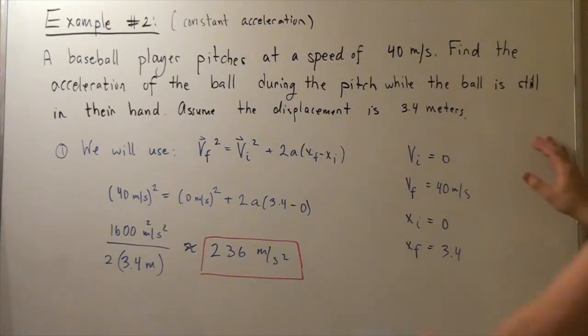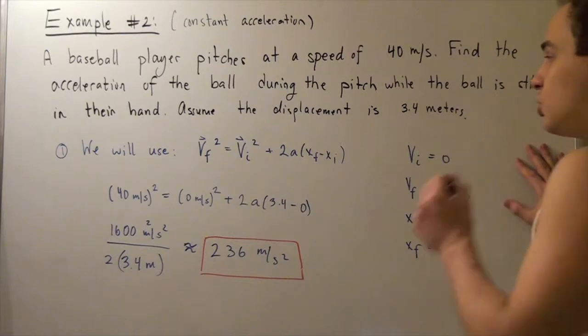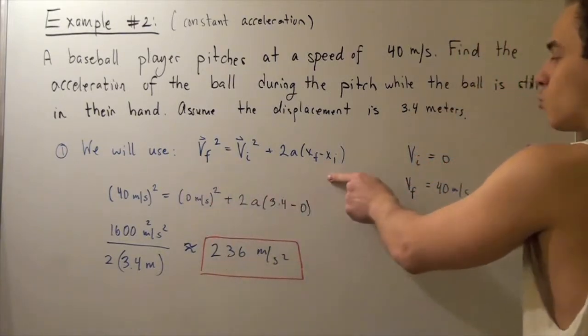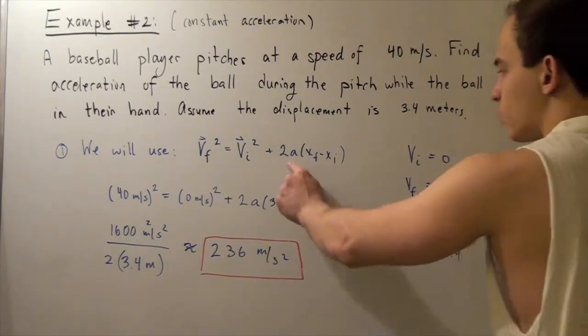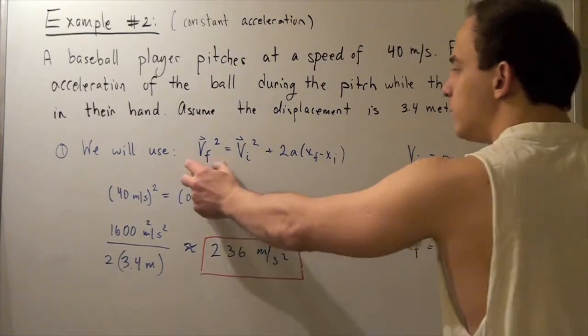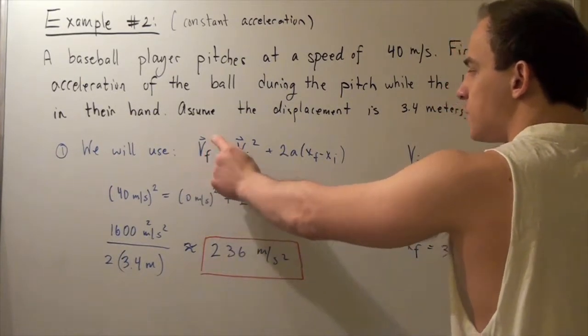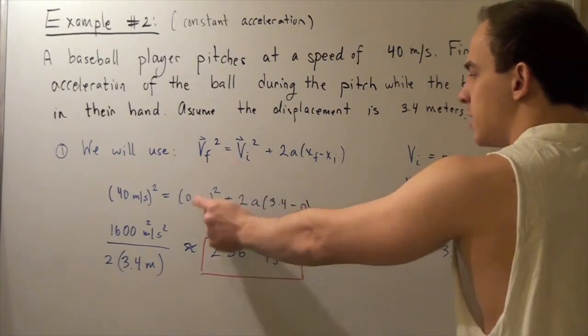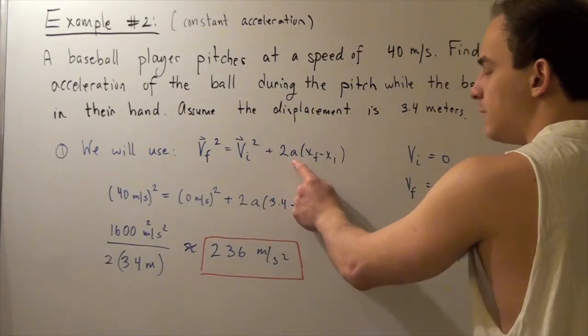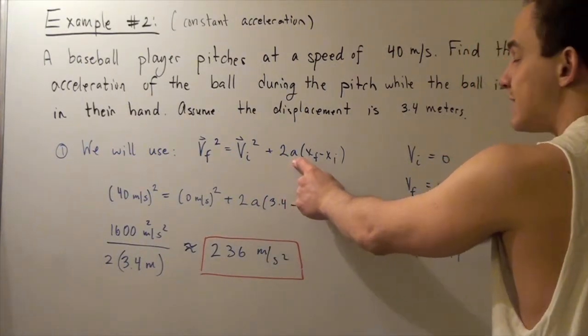So we know four variables. We don't know one variable: acceleration. We can use this equation directly to find our acceleration. We plug in 40 meters per second here, 0 meters per second here. We plug in nothing for the A because we don't know the A. That's our unknown.